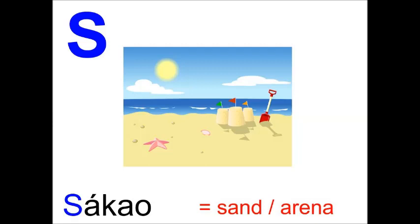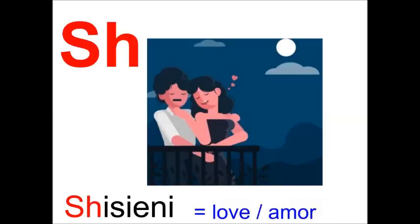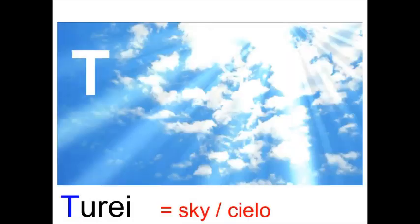Sa can also be pronounced sometimes as 'sha' before A or E. Ta. Turei. Ta can also be pronounced as 'da' in between vowels. También se puede pronunciar como 'da' entre vocales.